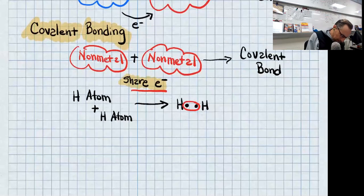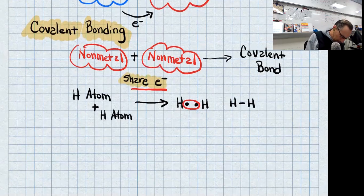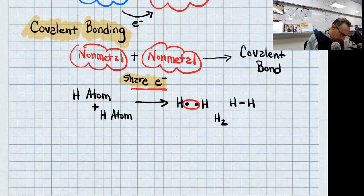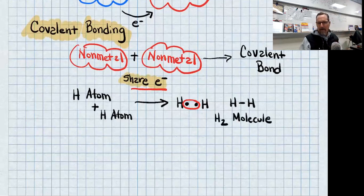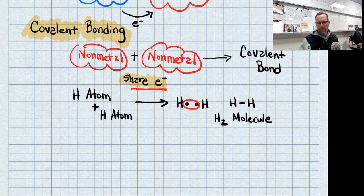When I draw out the structure, that circle forms a line, and that would be a hydrogen molecule. Now, we don't call that a hydrogen compound because it's just one element — two of one element. So it's a molecule.